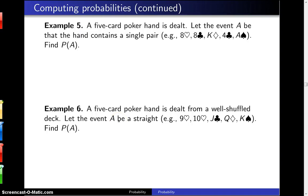A five card poker hand is dealt. Let the event A be that the hand contains a single pair. Find the probability of A. And I include an example here of a single pair as a pair of eights. In this particular hand we got the eight of hearts and the eight of clubs. And to have a single pair, that means the other three cards must be all different ranks other than the rank chosen for the pair.